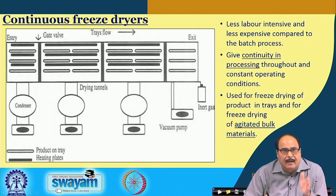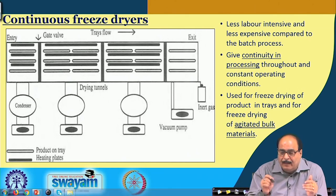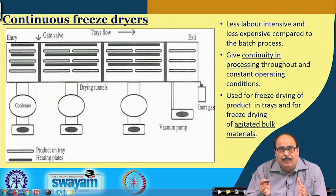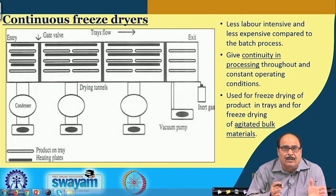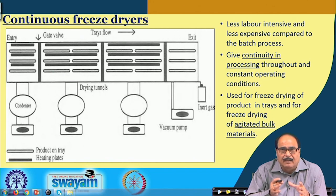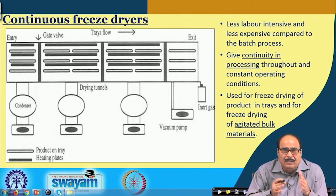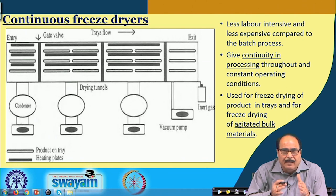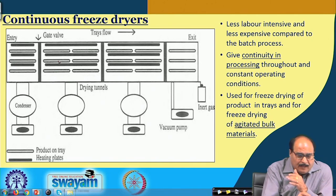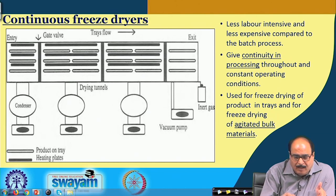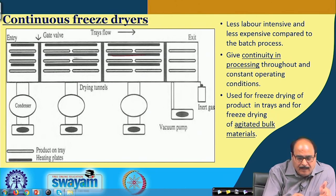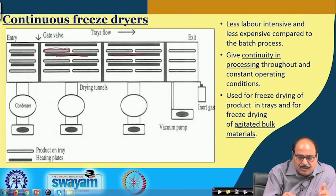The other type is a continuous freeze dryer, as shown in this figure. Since it is a continuous system, it involves less labour requirement and is also a less expensive process compared to batch processing. It gives continuity in processing and constant operating conditions can be maintained. It is generally used for freeze drying of products in trays as well as for freeze drying of agitated bulk materials. The trays move among the heating plates.